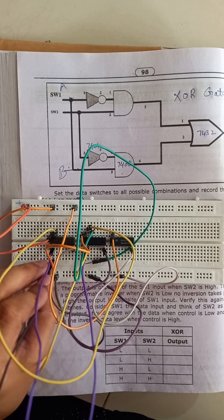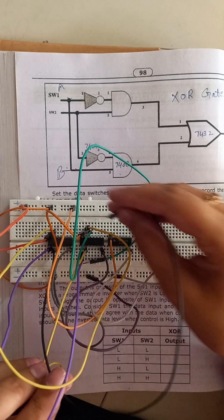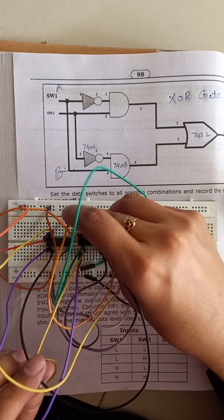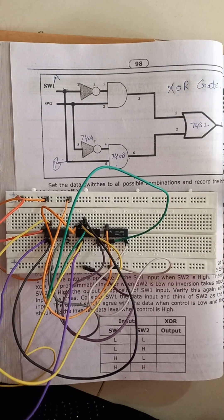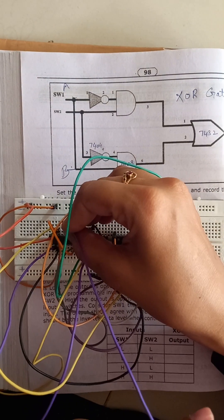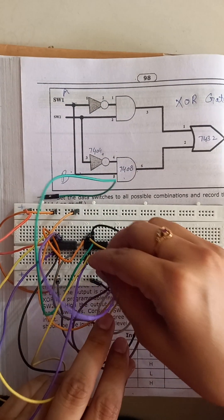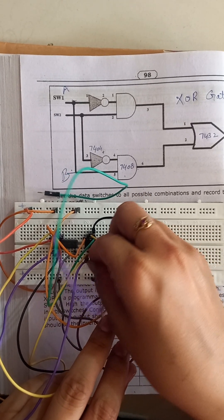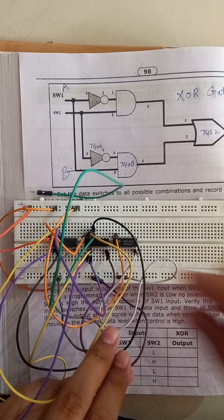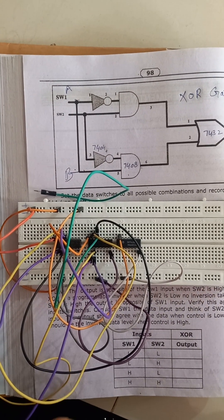Now the output of the NOT gate connected to the other input of the AND gate. Now this output is connected to the input of the AND gate. Now output of the AND gate connected to the input of the OR gate.